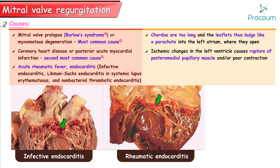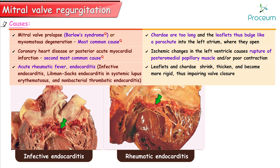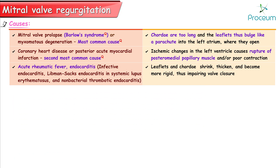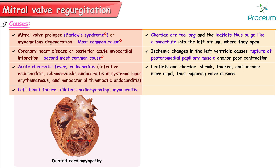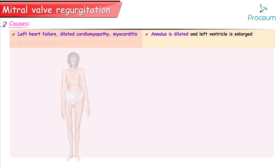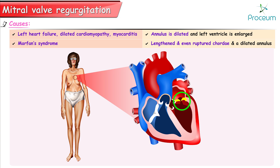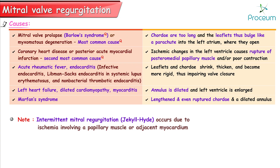Acute rheumatic fever and endocarditis — including infective endocarditis, Libman-Sachs endocarditis as in systemic lupus erythematosus, and non-bacterial thrombotic endocarditis — can all cause the leaflets and chordae to shrink and become more rigid, impairing valve closure. Left heart failure, dilated cardiomyopathy, and myocarditis result in the annulus becoming dilated and the left ventricle enlarged. Marfan syndrome results in lengthened and even ruptured chordae and a dilated annulus. Intermittent mitral regurgitation occurs due to ischemia involving a papillary muscle or adjacent myocardium.